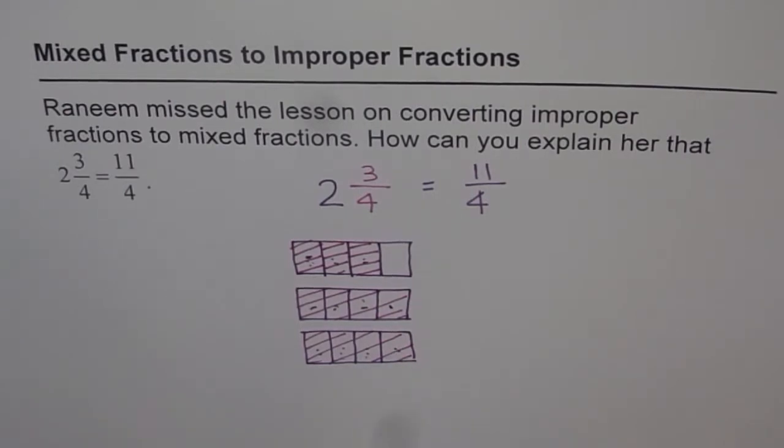I hope you get it. Yes, it is. So with the help of a diagram, we can easily show that 2 wholes and 3 fourths is equal to 11 fourths.